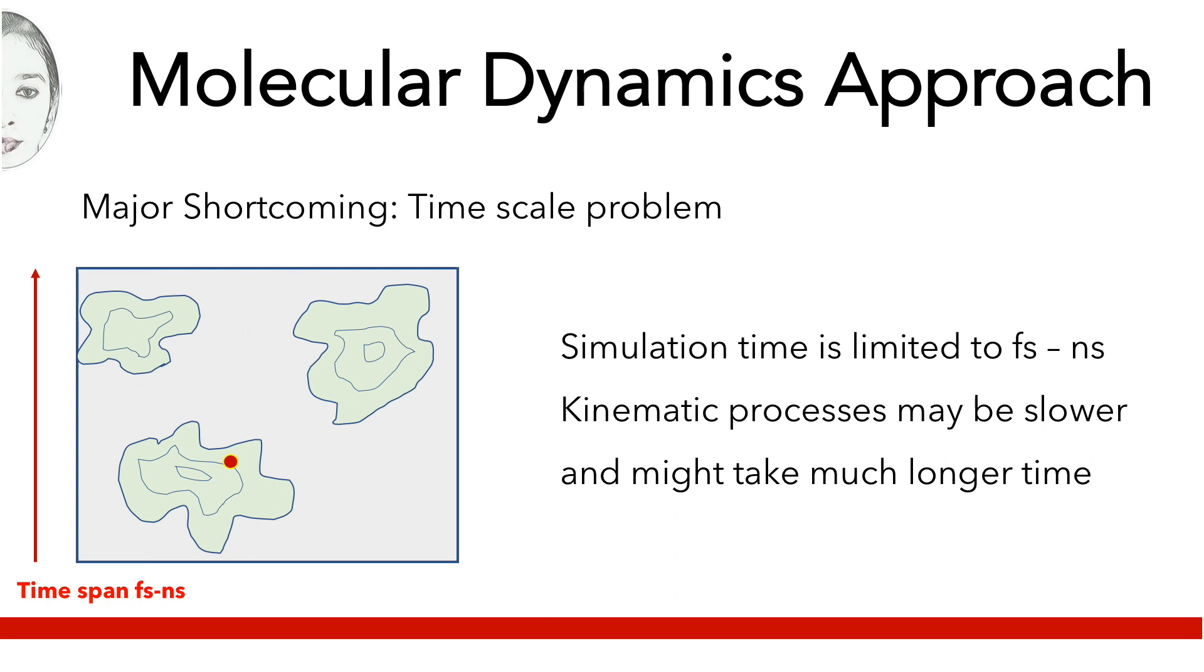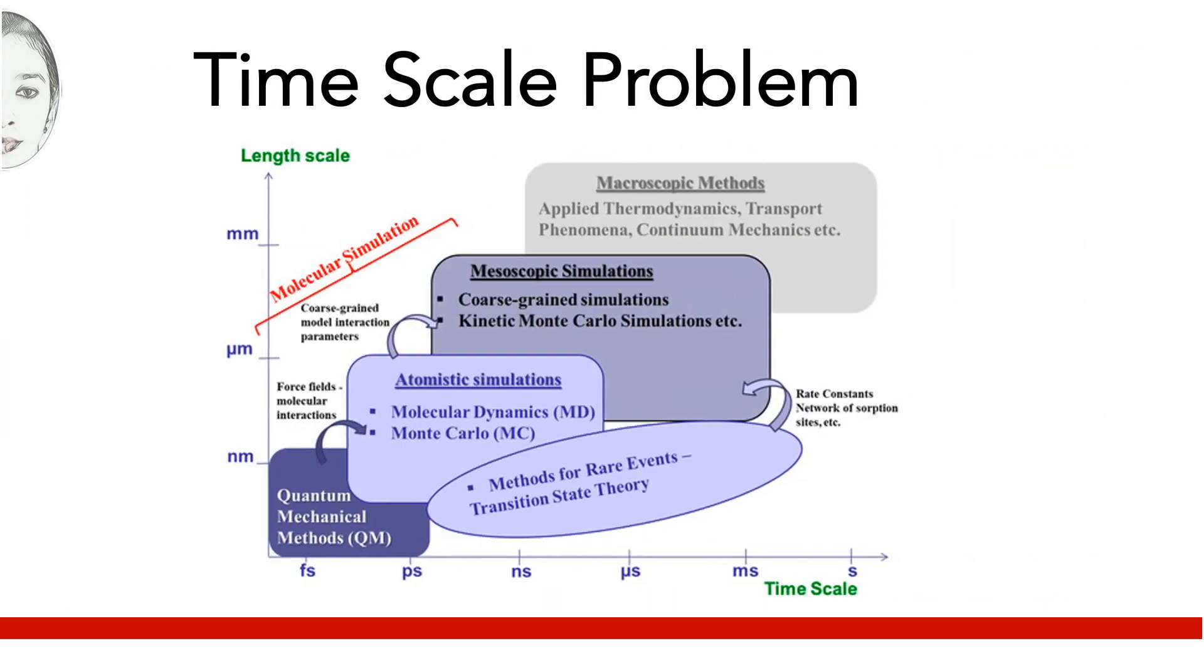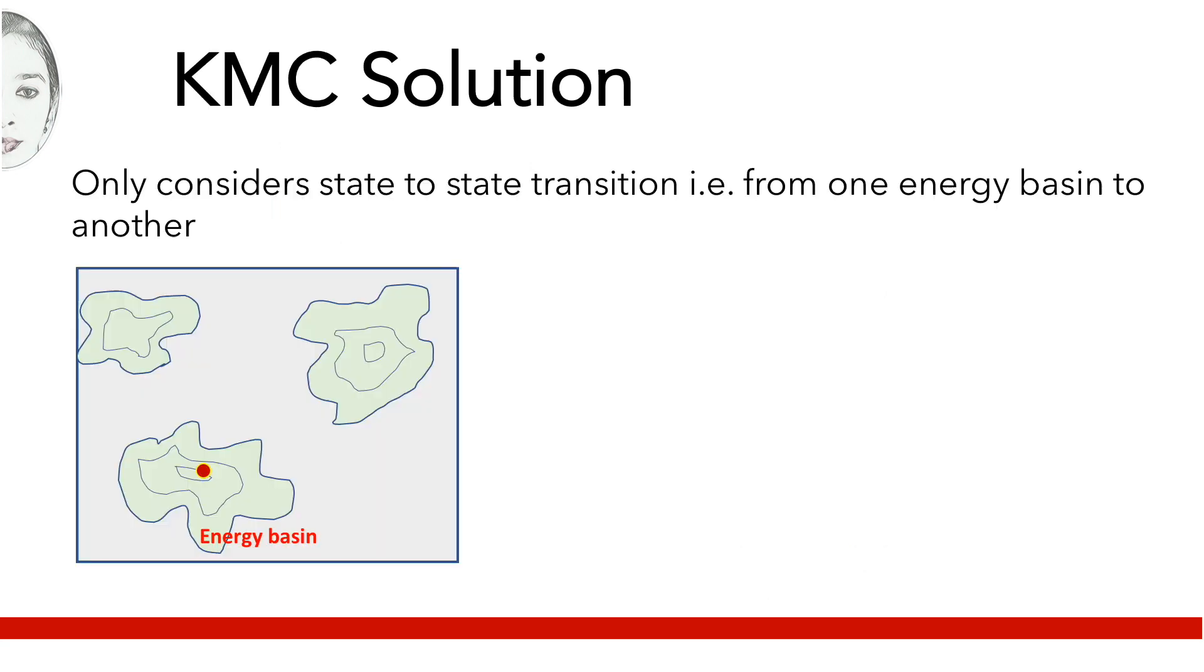In comparison, the time step for a kinematic process can be very slow. Therefore, MD fails to capture such slow phenomena. On another level, kinetic Monte Carlo simulations can increase the time scale up to microseconds, and therefore kinetic Monte Carlo is a solution to such time scale problems.